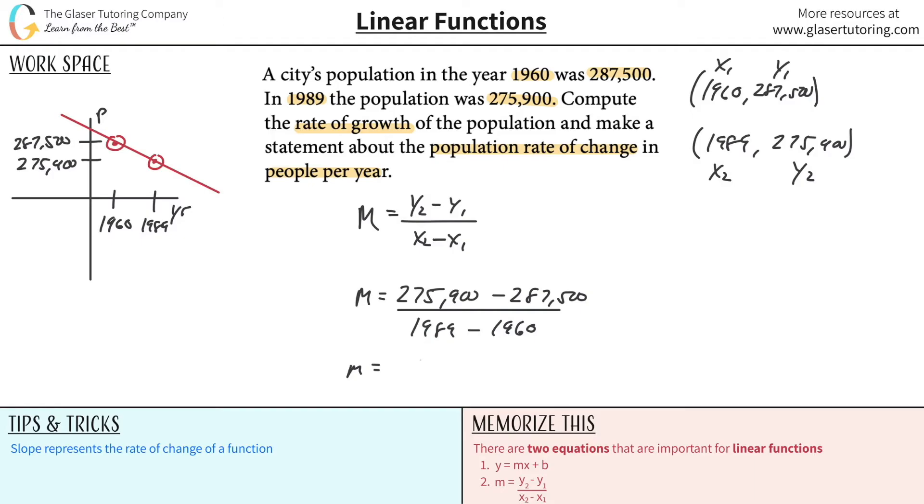So let's do the numerator. So 275,900 minus 287,500. And we get now negative 11,600, meaning this is really the amount of people that has changed in that period of time. And then doing the denominator now, 1989 minus 1960, that's going to be 29, meaning this is the value now of years.